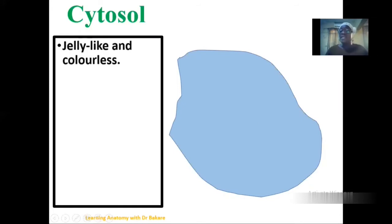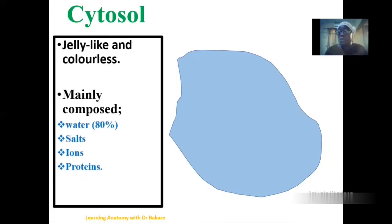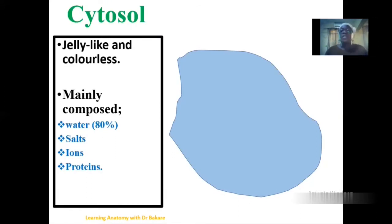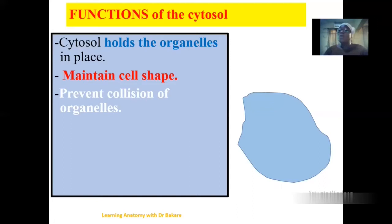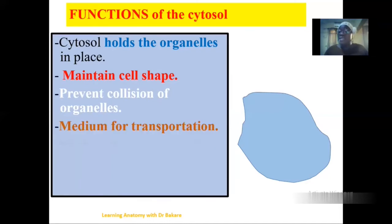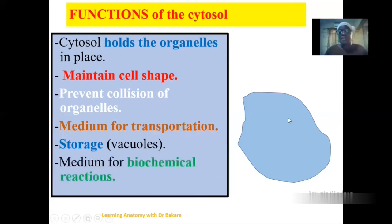The cytosol is a fluid within the intracellular compartment. This fluid is jelly-like and colorless, and it is mainly composed of water, salts, ions, and proteins. The cytosol helps to hold the organelles in place and maintain the shape of the cell. It also helps to prevent the collision of cell organelles, thereby preventing them from damaging each other's structural configuration. It is also a means of transportation, allowing movement of substances from one region to another. It also acts as a storage medium and a medium for chemical reactions.